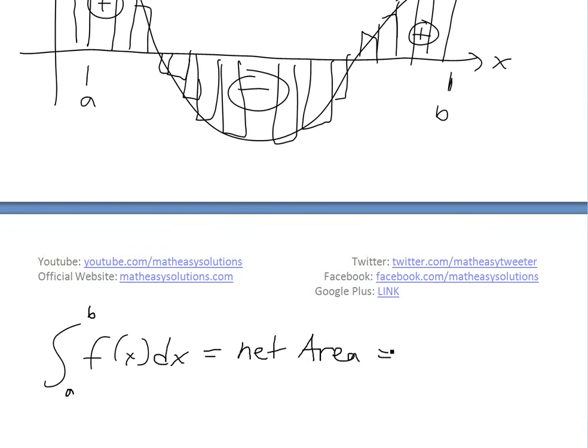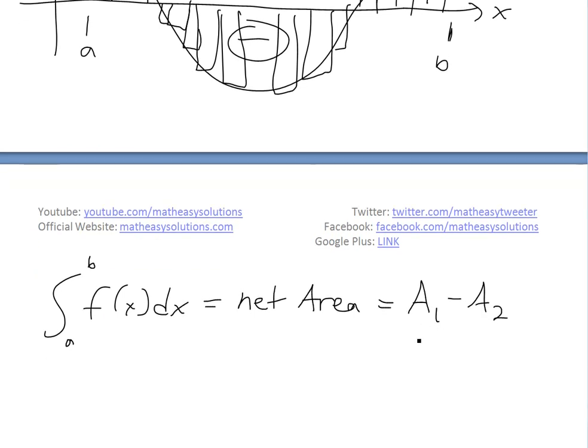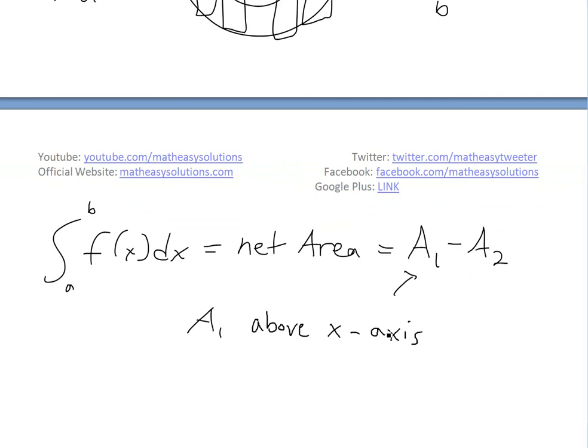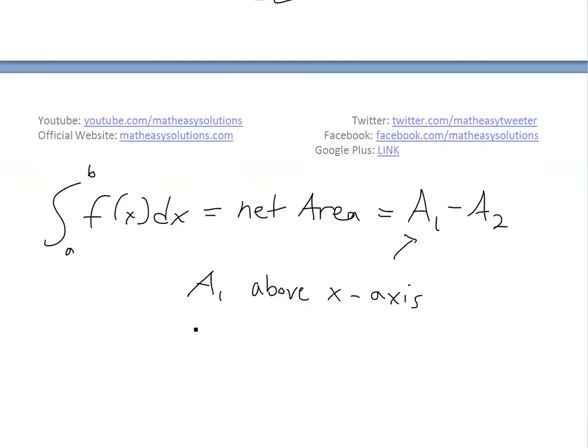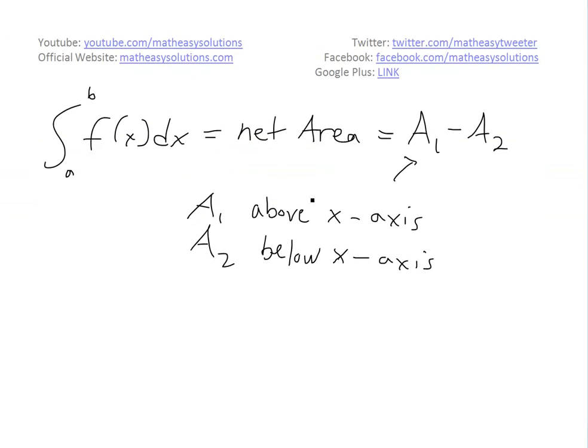So then this integral of f(x) dx from a to b is just gonna equal to net area, here, and this equals to area 1 minus area 2, where area 1 is, let's say, above the 0 line, or just above x-axis, and A2 is equal to below the x-axis. So then, there's just a net area, here,